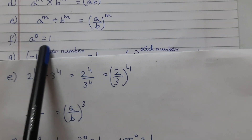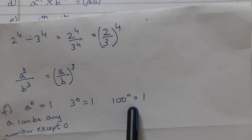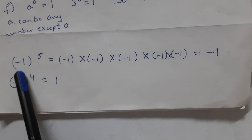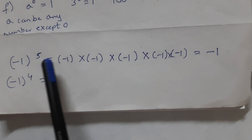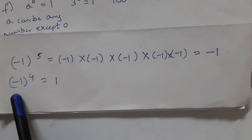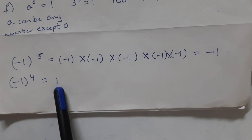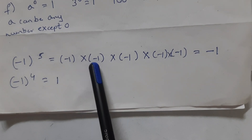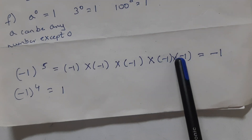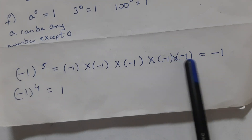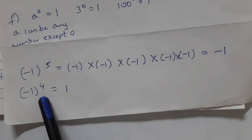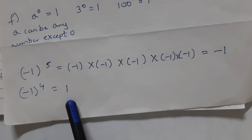Any number raised to the power of 0 is 1. So 3 raised to the power of 0 is 1, and 100 raised to the power of 0 is 1 — but a can be any number except 0. Minus 1 raised to the power of 5 — this is an odd number, so the result is minus 1. And minus 1 raised to an even power is 1. You can multiply and verify: just remember, if the exponent is odd, write minus 1; if it is even, write positive 1.